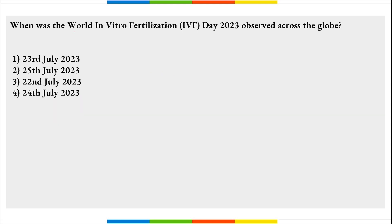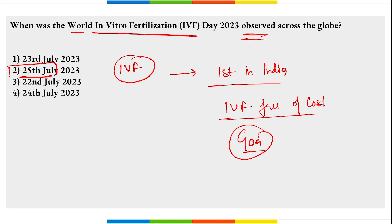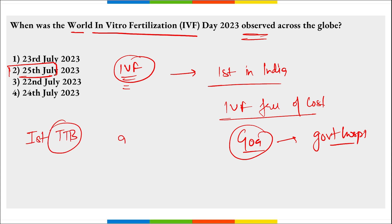When was World IVF Day observed? On 25th of July, World IVF Day is observed. Goa became the first state in India to provide IVF services free of cost in government hospitals. World IVF Day is observed on 25th July because the world's first test tube baby was born on 25th July 1978.